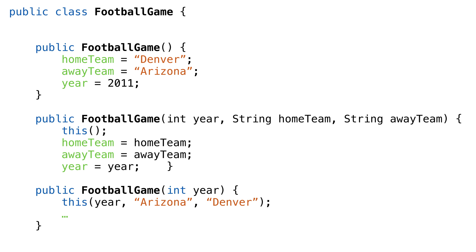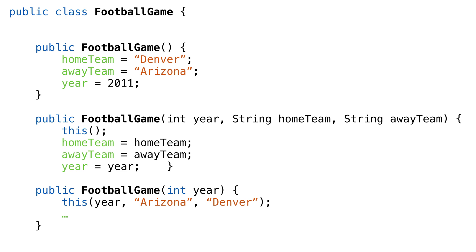A classic pattern for chaining constructors is to perform one initialization step each time. The starting constructor sets everything to a default value. Then each constructor adds one bit of information based on its parameter. If we have a situation where the constructor path is simple, or initialization values are always known in a particular order, chaining constructors works great.